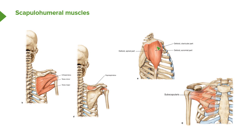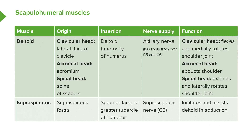All three parts converge down onto the deltoid tuberosity of the humerus on the lateral surface. The clavicular head, acromial head, and spinal head all run to the deltoid tuberosity. The muscle is innervated via the axillary nerve, which comes from C5.